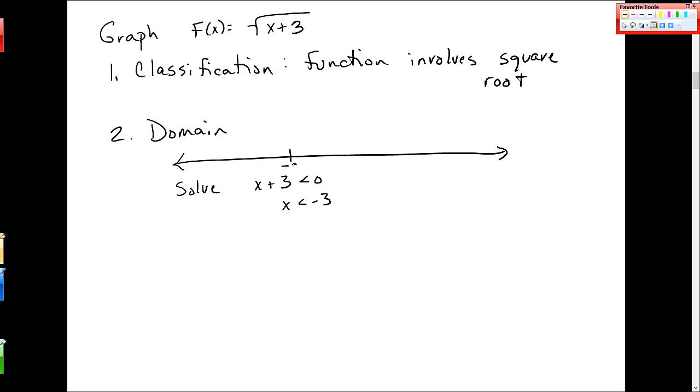So my real line looks something like that, negative 3. And I have to throw all of that out, which means that the places that I can have look like this. And to the right.